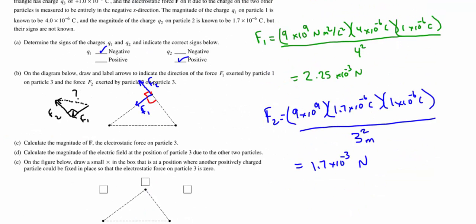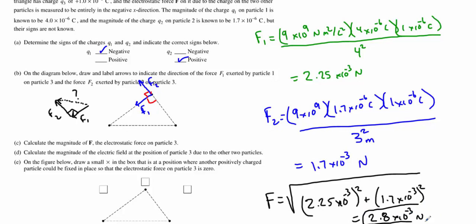That's definitely the easiest way of doing this. So your net force, F, is going to be the square root of each leg squared. And we get an overall, once we do that squaring and the square rooting, we're going to get an overall value of 2.8 times 10 to the negative 3 newtons. And that is the answer to part C.